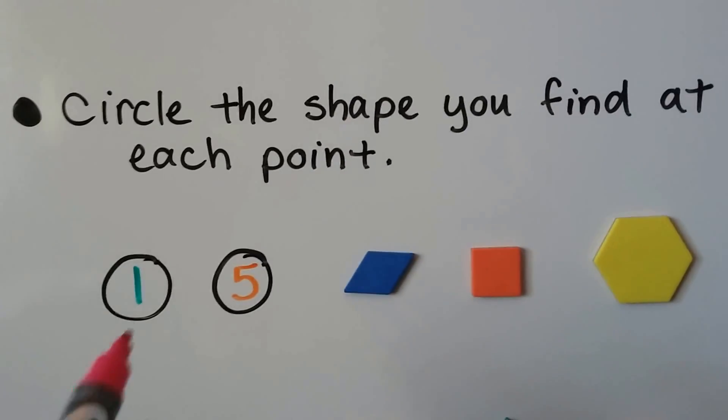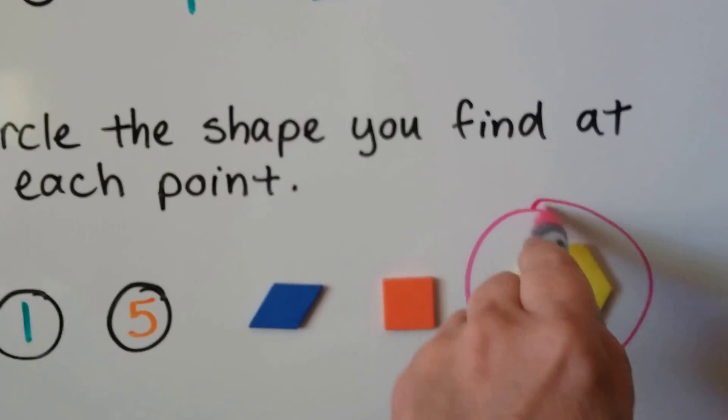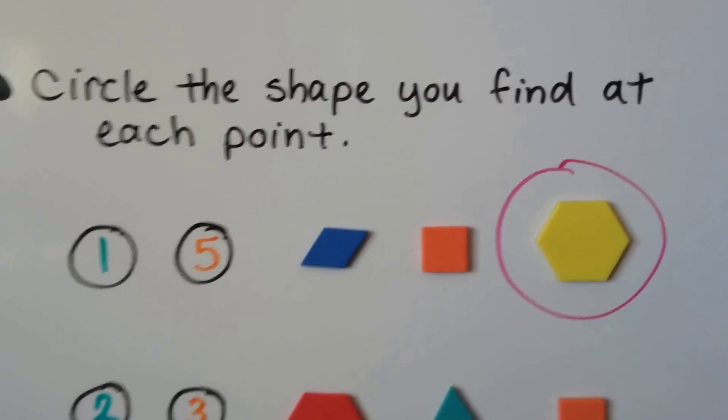Which shape is at the green 1 and orange 5 point? It's the yellow hexagon, isn't it? Isn't that easy? Let's try another one.